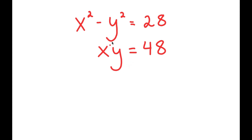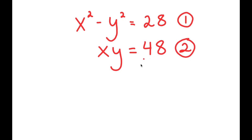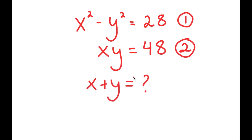In this system of equations, I have x squared minus y squared is equal to 28, and x times y equals 48. I have two equations — equation one and equation two. What I want to do is find the value of x plus y.